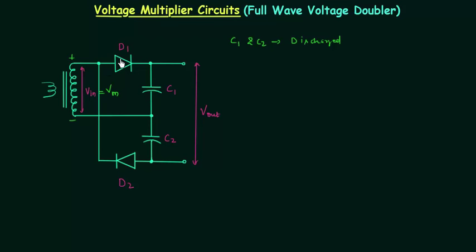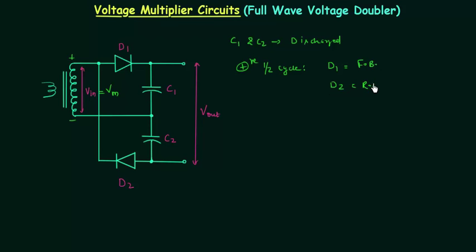Diode D1 is forward biased because the P side is connected to the positive terminal. Diode D2 is reverse biased because the N side is connected to the positive terminal and the P side is connected to the negative terminal. So for the positive half cycle, D1 is forward biased and D2 is reverse biased. D1 is replaced by a short circuit because we are using the ideal diode model, and D2 remains open circuited.